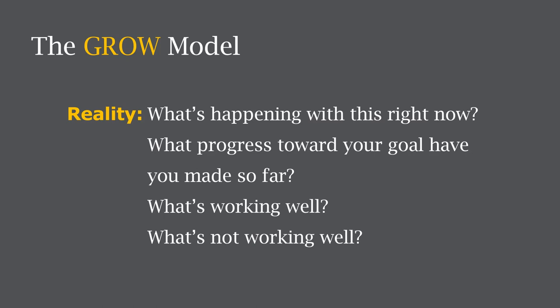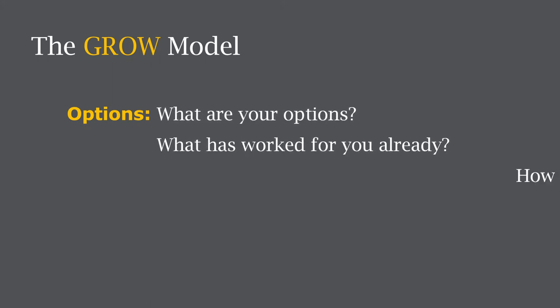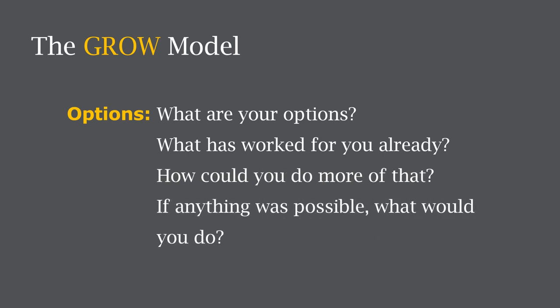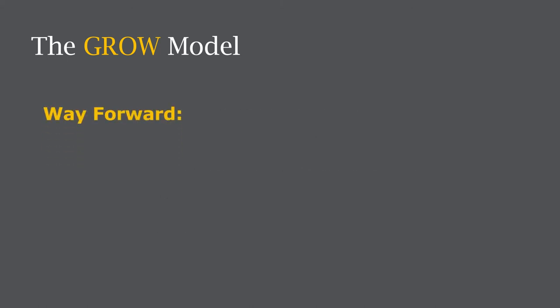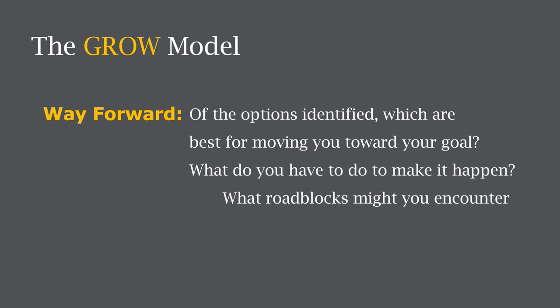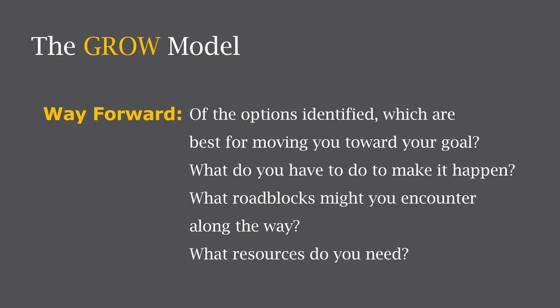Once you've helped her clarify her goal and have a clear sense of where things currently stand, it's time to explore options — different ways she might be able to reach her goal. You could ask: 'What are your options?', 'What has worked for you already and how could you do more of that?', and 'If anything was possible, what would you do?' Last, help her sort through the options to settle on her next steps — the way forward — asking things like: 'Of the options you've identified, which are best for moving you toward your goal?', 'What do you have to do to make it happen?', 'What roadblocks might you encounter?', and 'What resources do you need?' See the resource guide for a full list of GROW model questions.